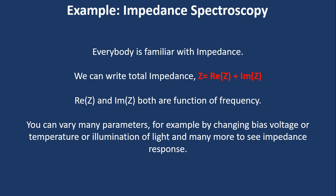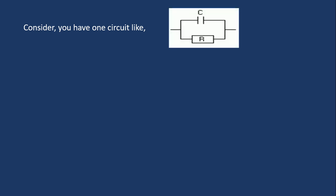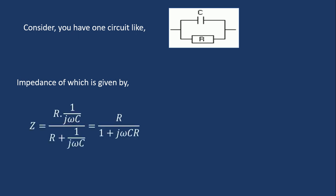You can vary many parameters to see the impedance response of the system, such as bias voltage, temperature, illumination of light, and many more. Consider one simple and interesting circuit: one C and one R in parallel. The total impedance of the circuit is given by Z equal to R times (1/jωC) divided by R plus (1/jωC), where R corresponds to the resistor and 1/jωC corresponds to the capacitor.